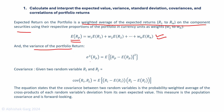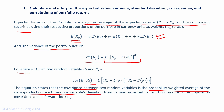Similarly, the variance of the portfolio return, sigma squared Rp, is the expected value of deviations of the return from the expected return. When we are talking about two random variables, the covariance of Ri and Rj is the expected value of the cross product of their deviations. The covariance between two random variables is the probability-weighted average of the cross products of each random variable's deviation from its own expected value.